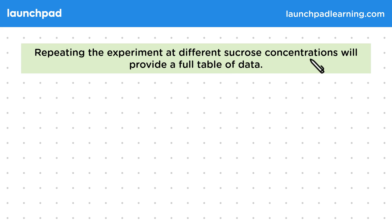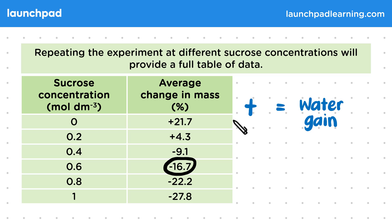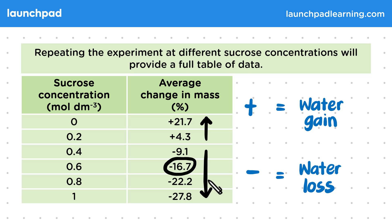Repeating the experiment at different sucrose concentrations provides a full table of data. Here you can see the average change in mass as sucrose concentration increases down the table — including the value we just calculated. Some values have a positive sign, indicating water gain as mass has increased, and some have a negative sign, indicating water loss. At low sucrose concentrations the mass is increasing, but as sucrose concentration increases, the average change in mass decreases, because more water is lost by osmosis.